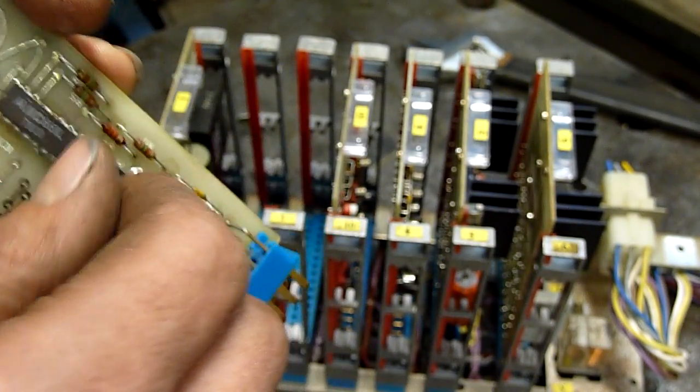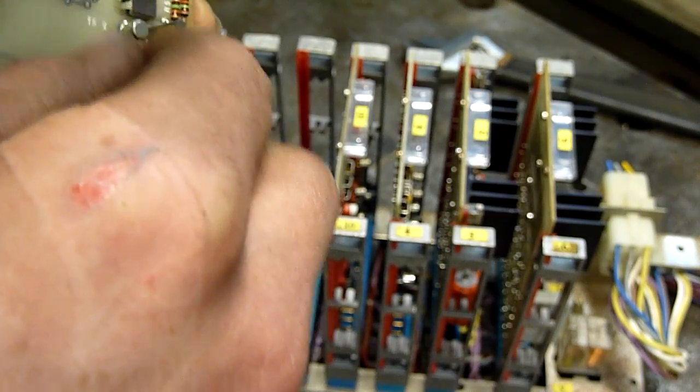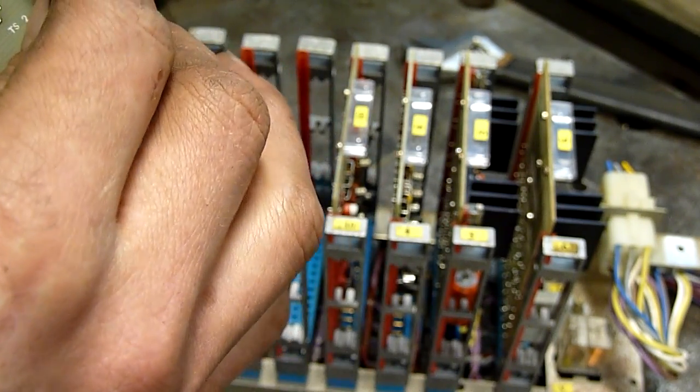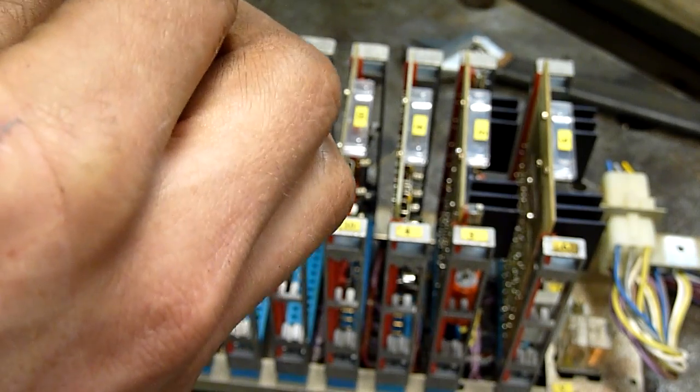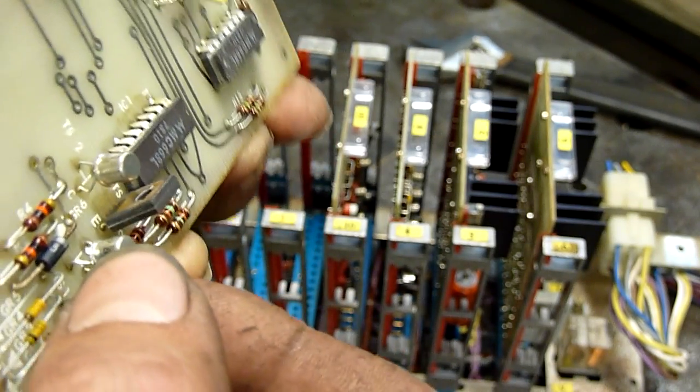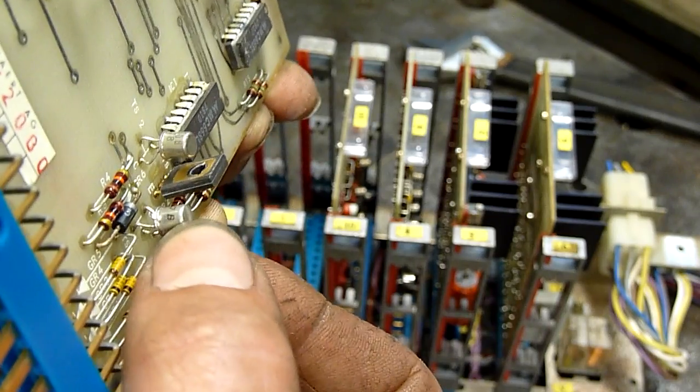But yeah, these transistors here, it's hard to tell, some of them are pretty degraded, that one there is BC107B, and that one there.